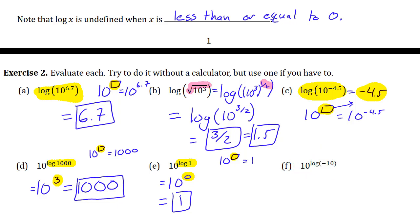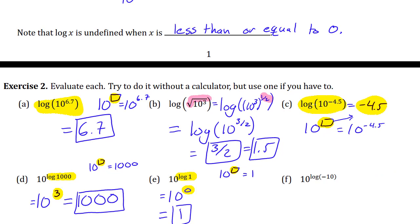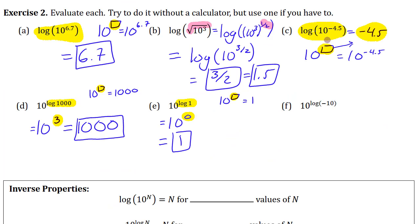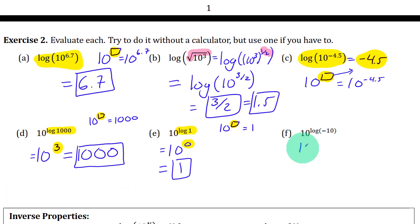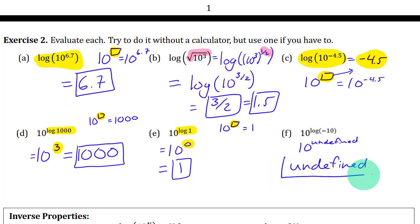But what about log of negative 10? Log of x is undefined when x is less than or equal to 0, and negative 10 falls there. So that means this is undefined. This is like 10 to the power of something that doesn't exist — it itself doesn't exist. So they don't always cancel each other out if part of it is undefined.